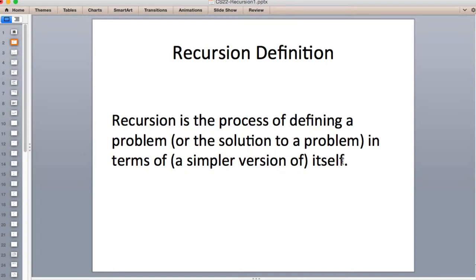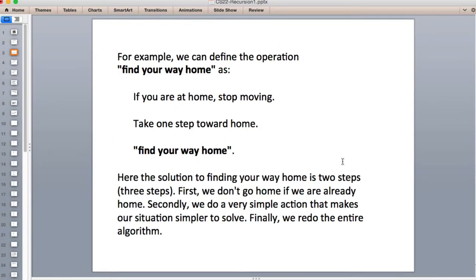We're going to look at that in terms of finding your way home. Here's an example of a verbal recursive algorithm. How do you find your way home? If you're at home, you stop moving. If you're not at home, you take one step toward home, and now you're closer to home. Now you just follow the formula again to find your way home. If you are home, you stop moving. Otherwise, you take a step toward home and repeat that. You can see that naturally recursion seems very much like a loop.